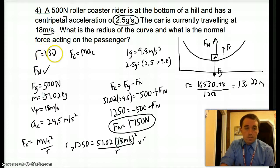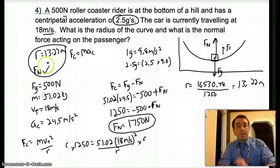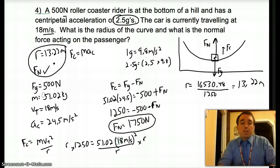So 13.22. All right, so I have my normal force, 1750 newtons, and my radius, 13.22 meters.